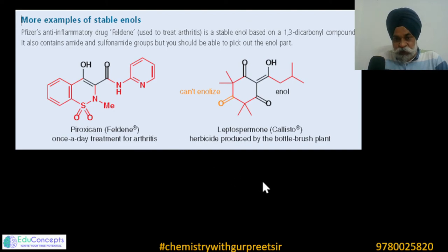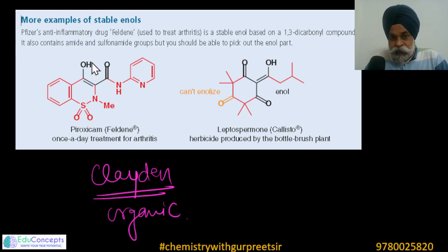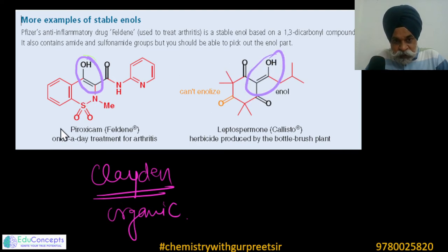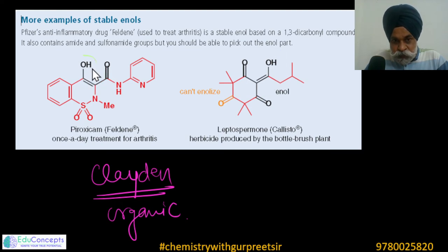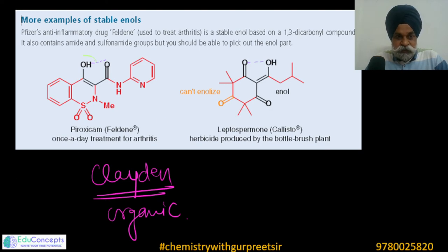Data from Clayden's organic chemistry book justifies these facts with many examples. Notably, some drugs exist predominantly in the enol form — for example, a drug formerly used in arthritis treatment that contains an enol with intramolecular H-bonding. Similarly, a herbicide compound also has intramolecular H-bonding with a hydrogen on one side. So it is not always the keto form that predominates; there are cases where the enol is the major form.